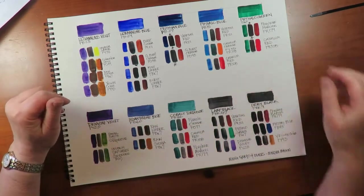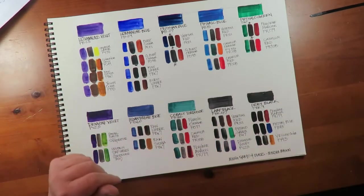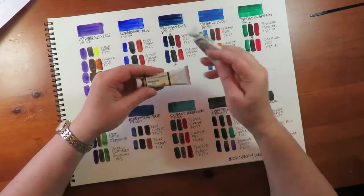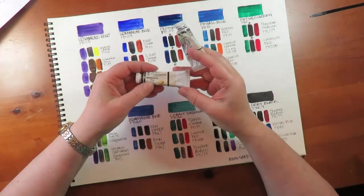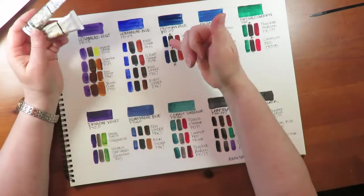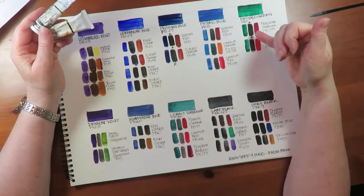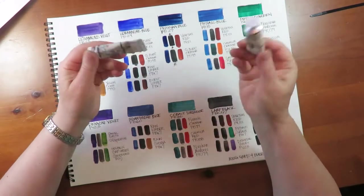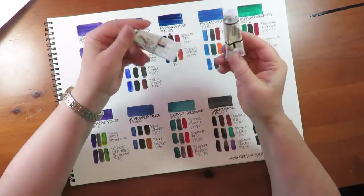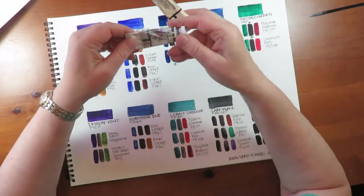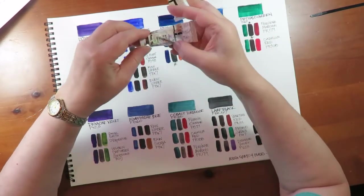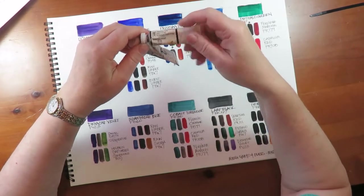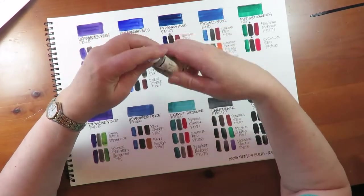There are some paints that you can buy out of the tube that are convenience mixtures, pre-mixed. Payne's gray is one, neutral tint is another. You can go to one of these real dark blacks and adjust them from there by adding things to them. Or you can do what I do and that's read on the tube what the combination of pigments is in that paint and then you can mix your own too.